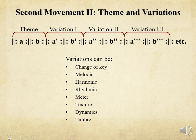The second movement of a multi-movement cycle is the theme and variations. As the name entails, a theme is presented and then each of the variations follows. The variations can differ in key; the melody can be varied slightly; they can have different harmony, rhythm, meters, textures, dynamics, or timbres.